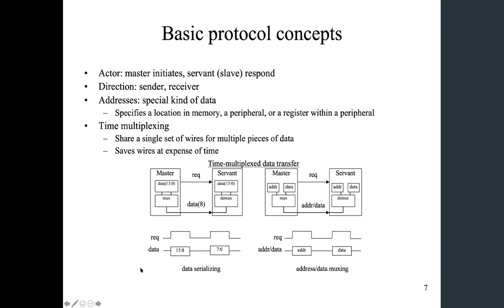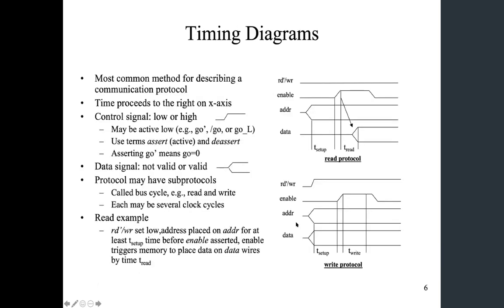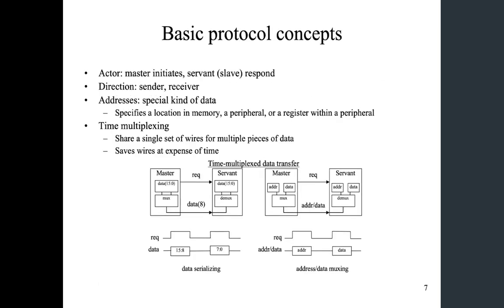The other case shown on the right side is to transfer both address and data. The example on the left side is not dealing with any address because there's only one storage register on the servant. Whereas in this case, you can imagine a more complex device with larger storage space, which has to be accessed using an address. So in such a case, we have to send both address and data.